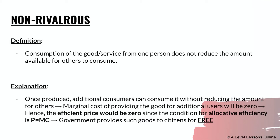The next condition is non-rivalrous in consumption: the consumption of the good or service by one person does not reduce the amount available for others to consume. An example of a public good that is both non-excludable and non-rivalrous would be street lights. If one person stands under a street light, it doesn't mean everyone else surrounding them can't receive that light too — ten people standing under it all receive the same amount of lighting.